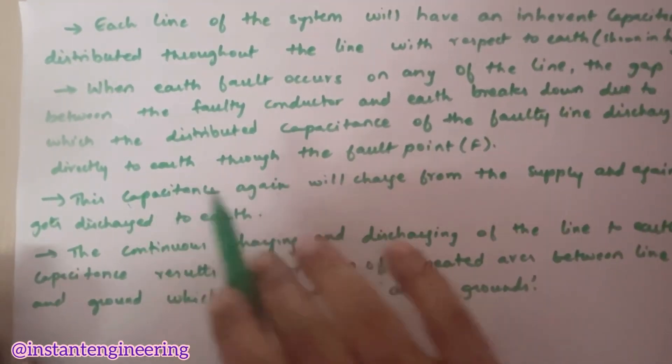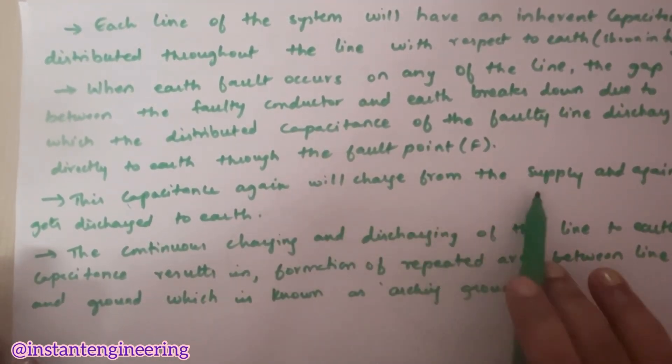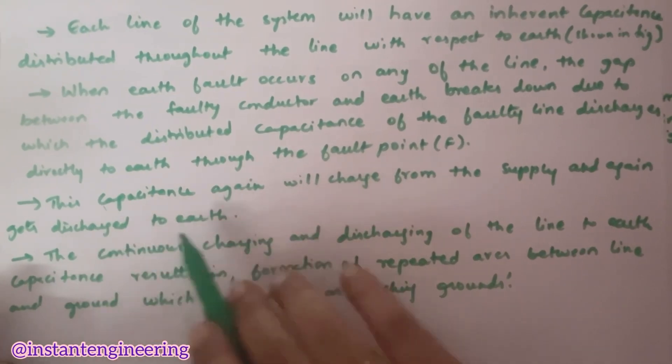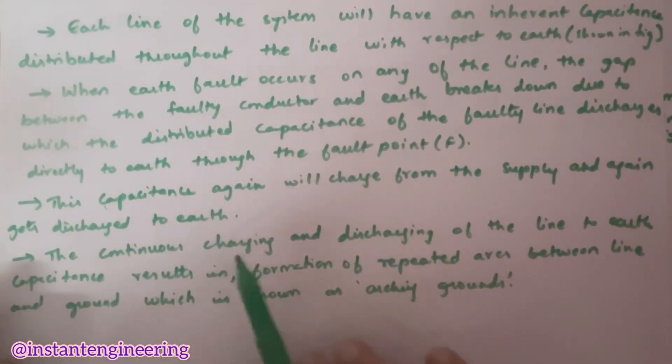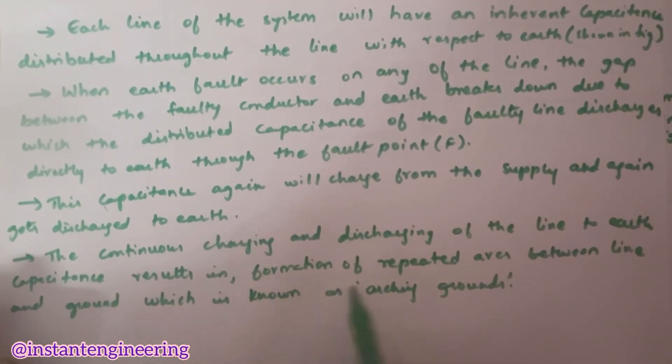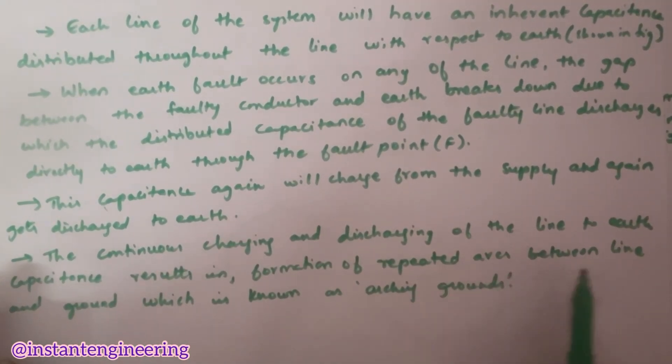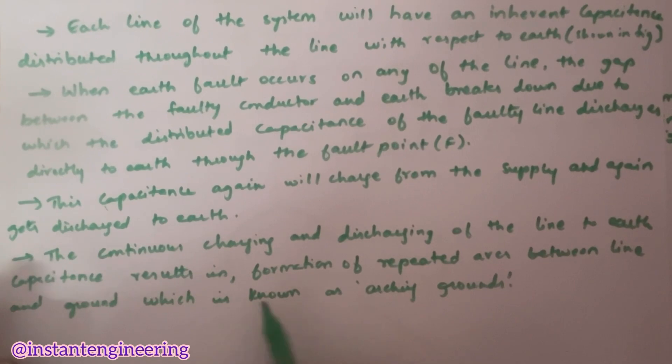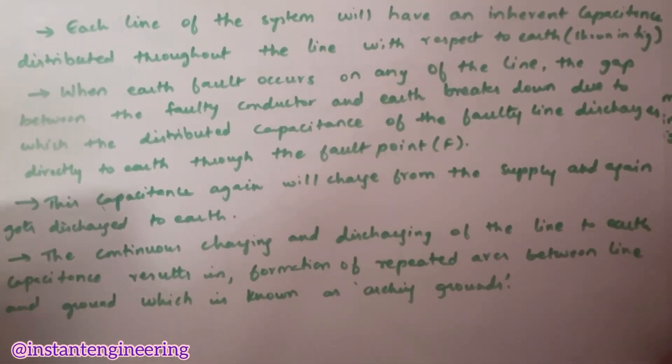This capacitance again will charge from the supply and again gets discharged to the earth. The continuous charging and discharging of the line to earth capacitance results in formation of repeated arcs between line and the ground, which is known as arcing grounds. Now, I will clearly again explain you.